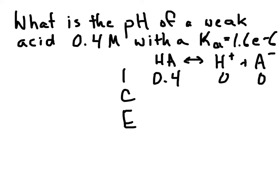Change. This is going to decrease by X. This will increase by X. And then the equilibrium line is where we add the initial and the change together. So it is 0.4 minus X. And these equilibriums will just be X and X.